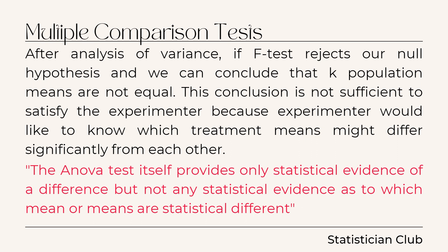In the null hypothesis, an equality sign is used, and in the alternative hypothesis, a not-equal sign is used. So when you use ANOVA table and by using the F-test you reject the null hypothesis, it means k population means are not equal because you accept the alternative hypothesis, and in the alternative hypothesis means are not equal.